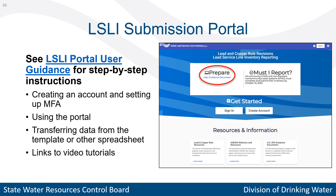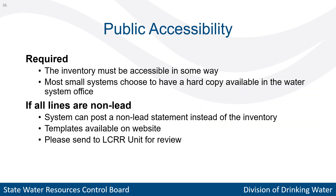We also recommend following the steps in our comprehensive LSLI portal user guidance document when you're ready to submit the inventory on the portal. It has instructions for account setup, transferring data from the template, and links to videos that demonstrate the submission process. Before submitting, be sure to complete the public accessibility section of the inventory. The inventory must be publicly accessible, and many systems choose to keep a hard copy available in their water system office.